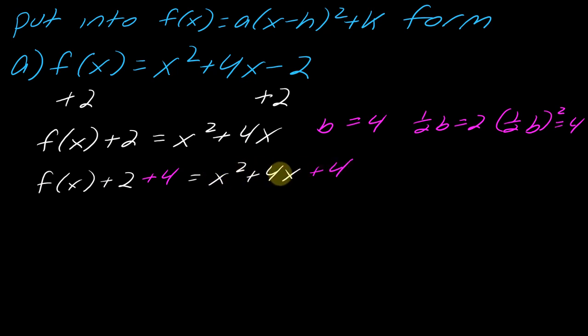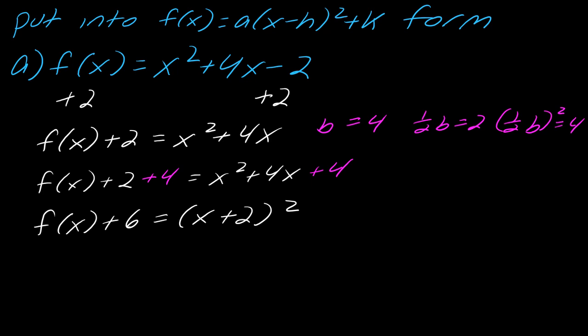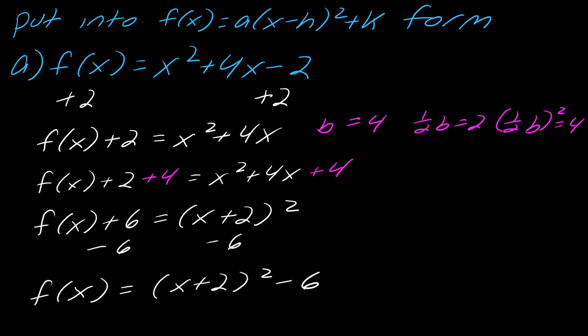On the left side I collect like terms, and on the right side I factor. So I've got f(x) plus six, and this equals x plus two squared. Now to finish this, all I have to do is subtract off the six. So my final answer is going to be f(x) equals x plus two squared minus six. This is a lot shorter when I'm not writing down everything.